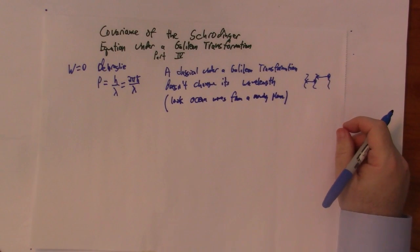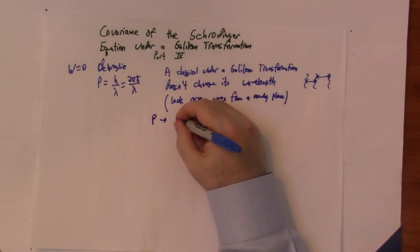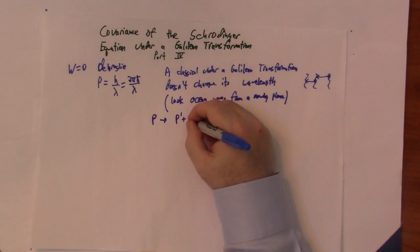Now, several papers were published, there was some confusion for a while, because we do know that under a Galilean transformation, p goes to p prime plus mv.